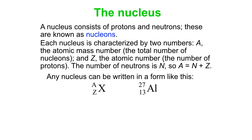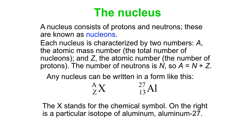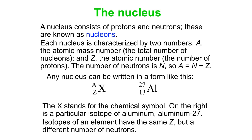Any nucleus can be written as A as a superscript, Z as a subscript, and then the chemical symbol for the nucleus itself. An example is aluminum-27, 13 protons. Aluminum by definition has 13 protons and an atomic number of 13, but it can have various isotopes. The most common form is aluminum-27, which has 14 neutrons. Different forms have different numbers of neutrons but the same number of protons.